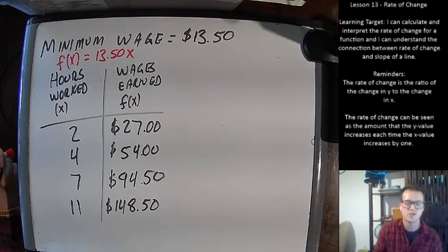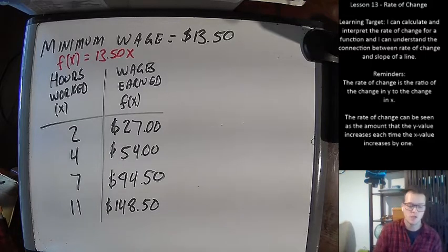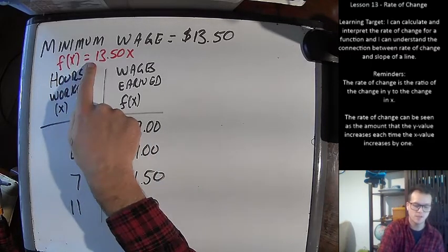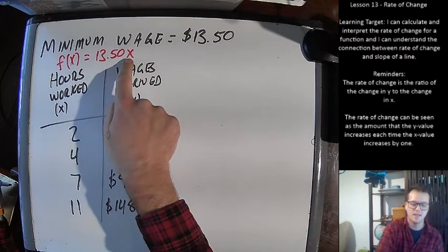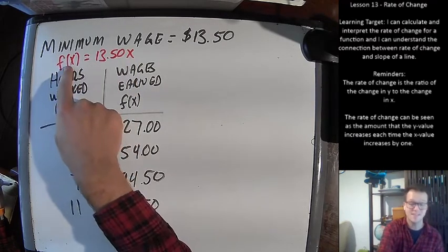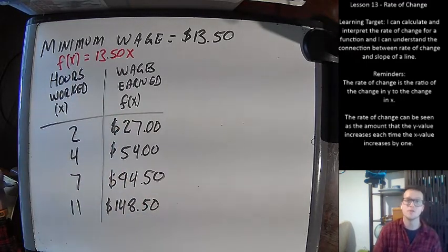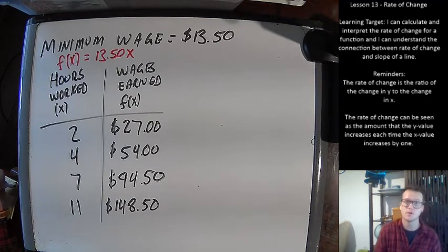Alright, this table here, it shows how much money you would make for working different amounts of hours at minimum wage. So I followed this function, F(X) = 13.50 times X. In this case, X is our input, and that's the number of hours worked. F(X), that's our output, and that's the total money earned. Of course, this is before taxes and other deductions. We're not going to worry about those for today.